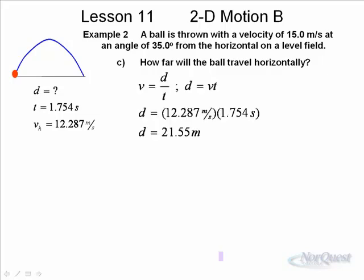How far will the ball travel horizontally? As I said, d equals v times t. Since the speed is 12.287 meters per second, and we just calculated the time was 1.754 seconds, the result is 21.55 meters. That is the horizontal distance that the object would undergo. We figured out the maximum height, time of flight, and horizontal distance: how far, how high, how long.